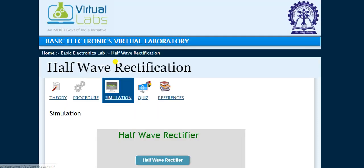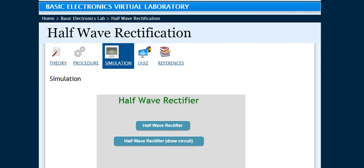So first we will see half wave rectifier. In half wave rectifier, there are two types of experiment. First is half wave rectifier in which a circuit is already given, and in half wave rectifier draw circuit, first we have to complete the circuit, then we will simulate it. So first we will go through the half wave rectifier.